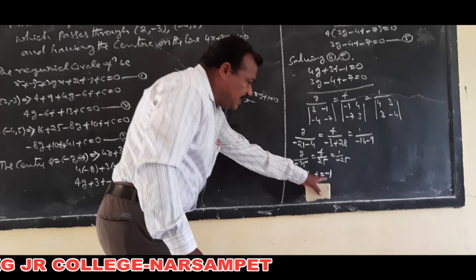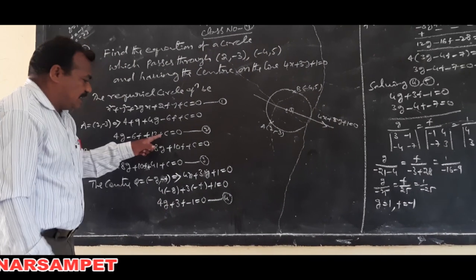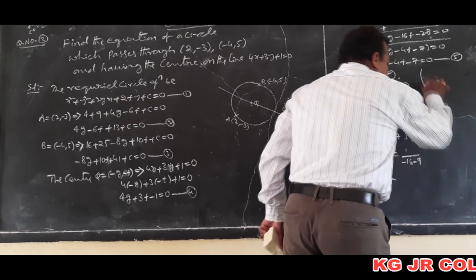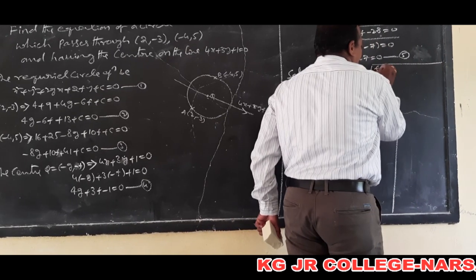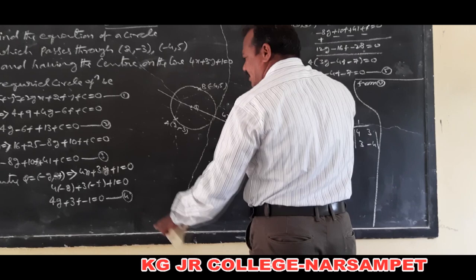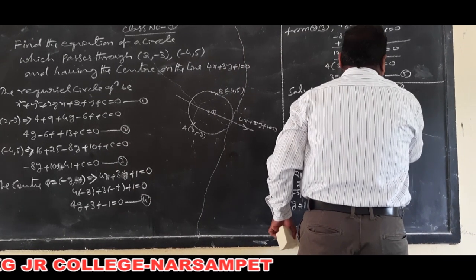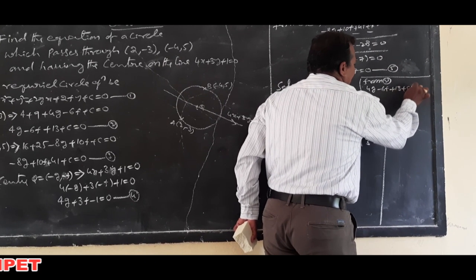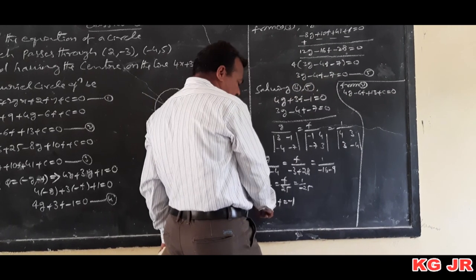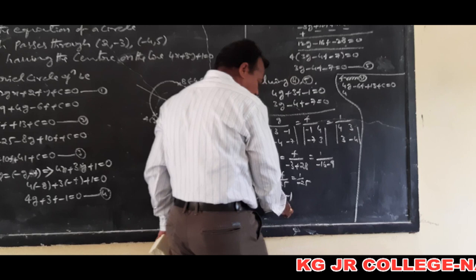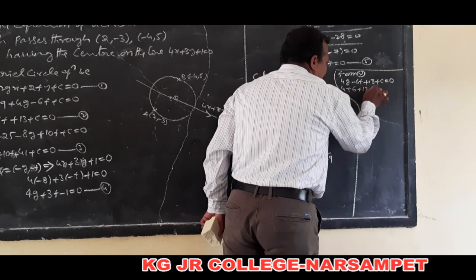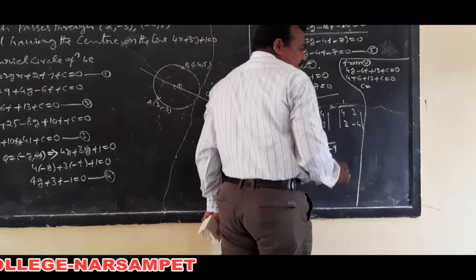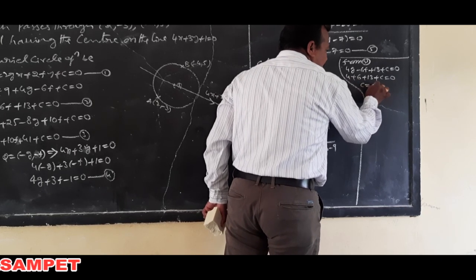We substitute g = 1 and f = -1 in any one of equations 2 or 3 to get the value of c. Substituting in equation 2: 4(1) - 6(-1) + c + 13 = 0, so 4 + 6 + 13 + c = 0, giving c + 23 = 0. Therefore c = -23.